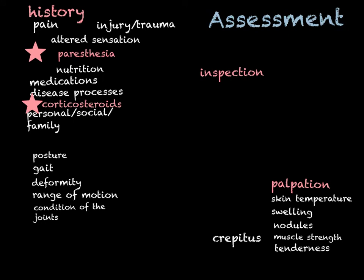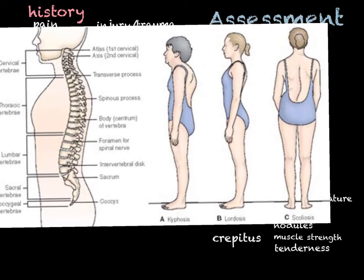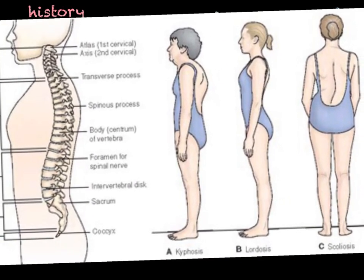The next obvious thing we do is inspect — and you're doing this as you're talking to the person most likely. We talk about posture. Kyphosis is this exaggerated curve of the thoracic spine, associated with age and osteoporosis — it's also called a dowager hump. When we see it, we usually know there's been some loss of height from a shortening of the vertebral column.